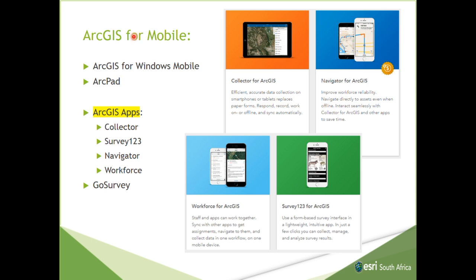Esri used to talk about their mobile suite as ArcGIS for Mobile, then ArcGIS for Windows Mobile — it really became complicated. Now they call it ArcGIS Apps. You've got Collector, Survey123, Navigator, and Workforce — all seem to be very good products. Survey123, which I've worked with extensively, is a very good product. I haven't had many issues with it. I've picked up two or three bugs, but it's quite a new product so we can't really expect it to be 100% yet. It supports quite a lot of native XLSForm functionality, which I'll show you later on.